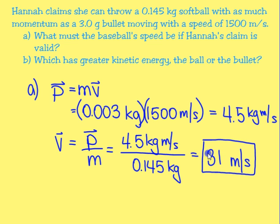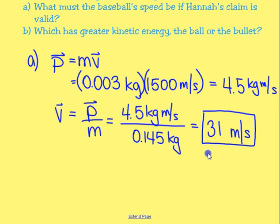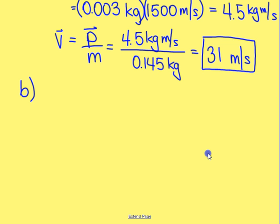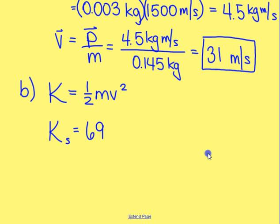The problem also asks which has greater kinetic energy — the ball or the bullet? Kinetic energy equals one-half mv squared. Pause the video and calculate for each. The kinetic energy of the softball is 69.8 joules, and the kinetic energy of the bullet is 3,375 joules. Clearly the bullet has far more kinetic energy than the softball.